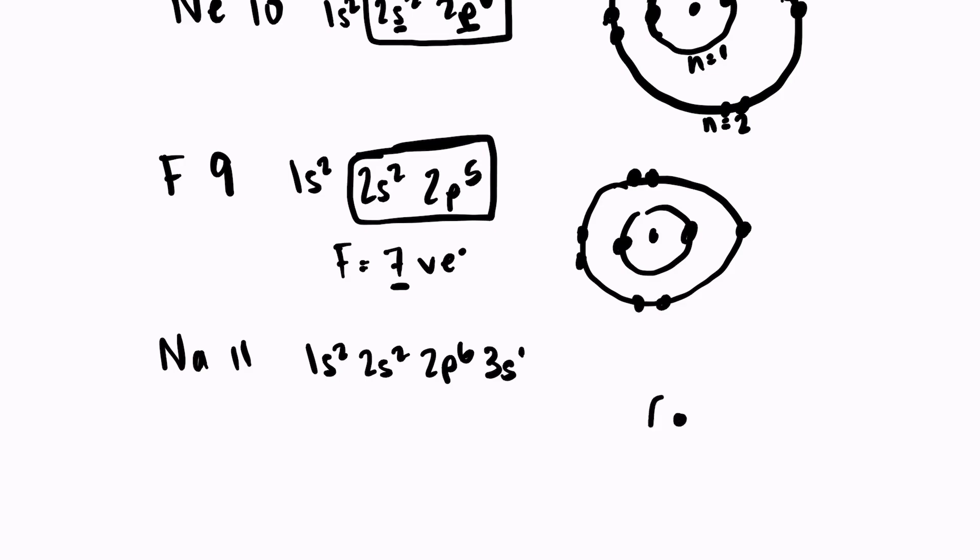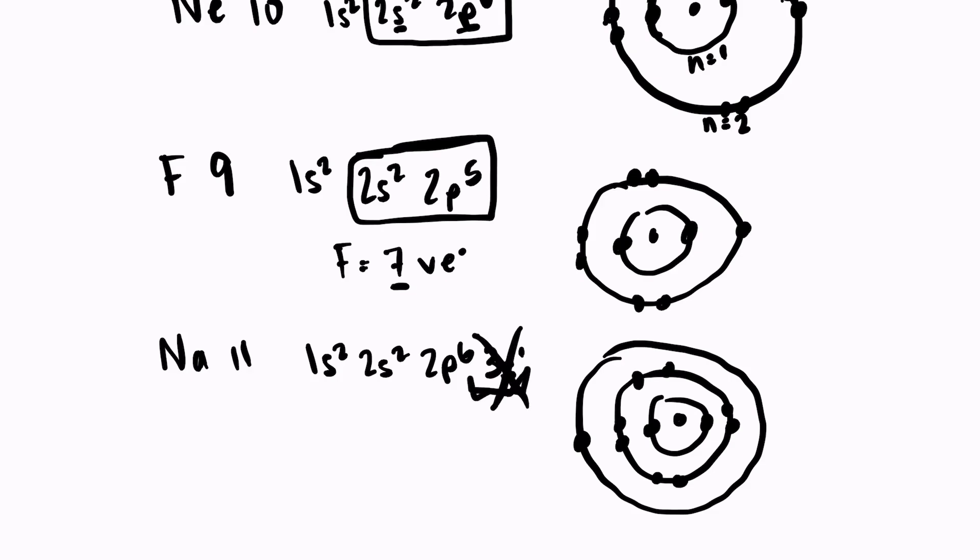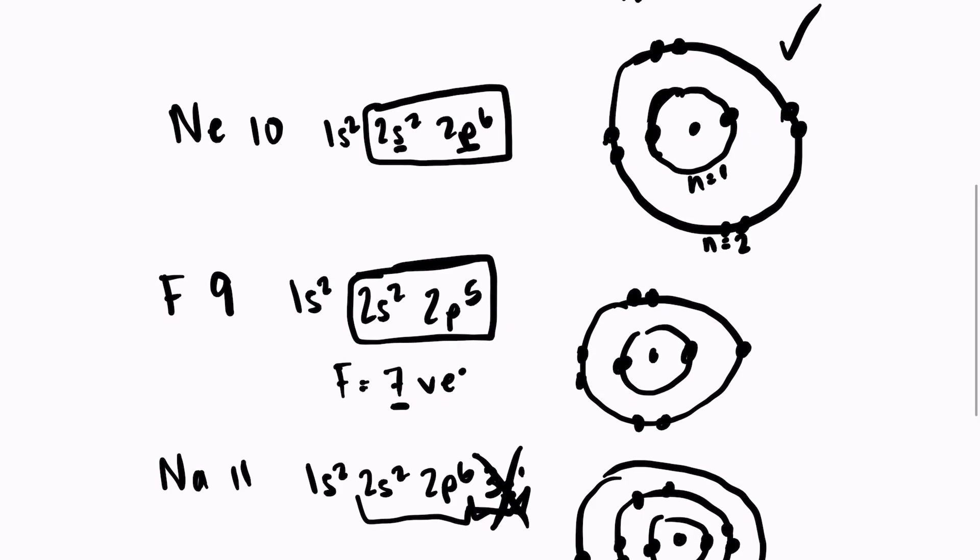If we were to look at a model of sodium, we have two electrons in the first energy level, eight in the second, and only one in the third energy level. So what will happen with sodium is that it will actually lose that outer electron. It will lose it so that when it's lost, underneath it has eight total valence electrons just like neon.